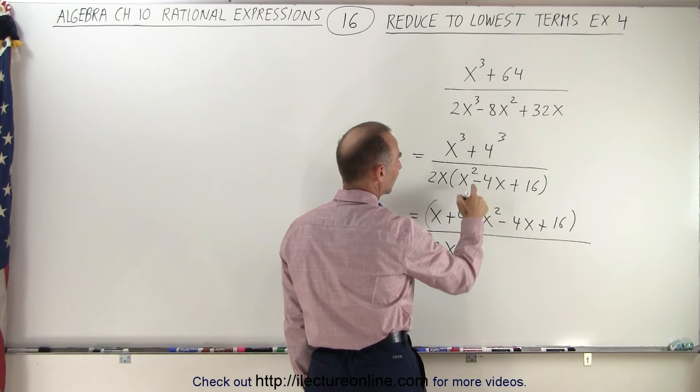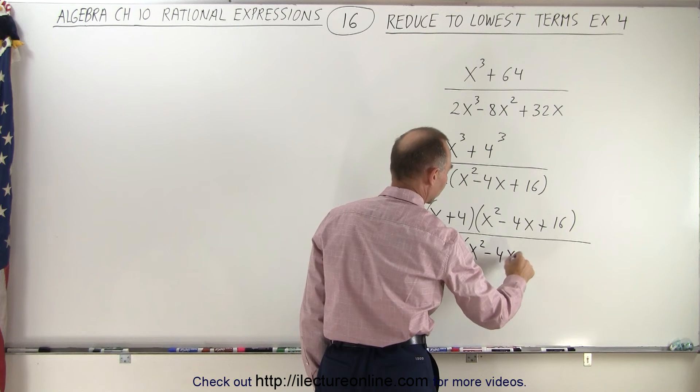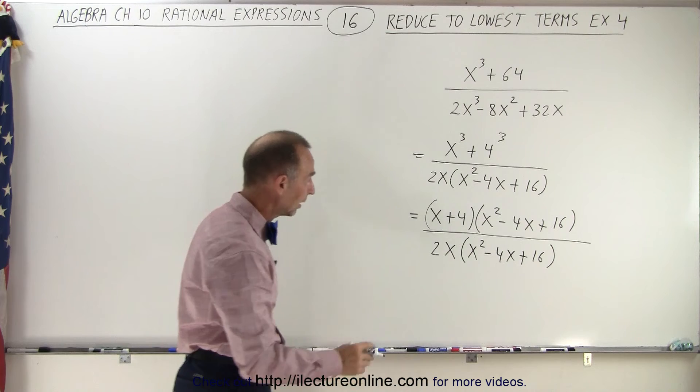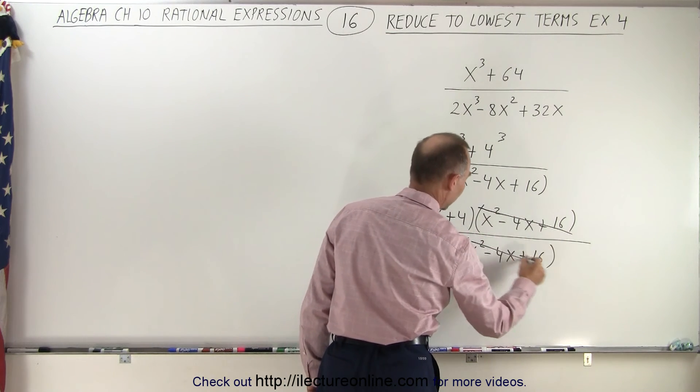Well, probably not, so we leave that as x squared minus 4x plus 16. And of course, we've realized, wait a minute, that looks exactly the same as what we have in the numerator, which means that this will cancel out.